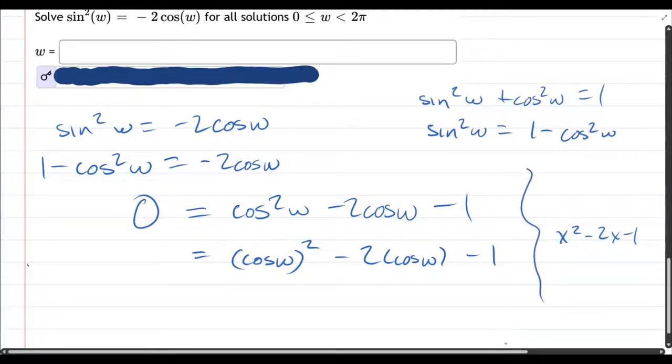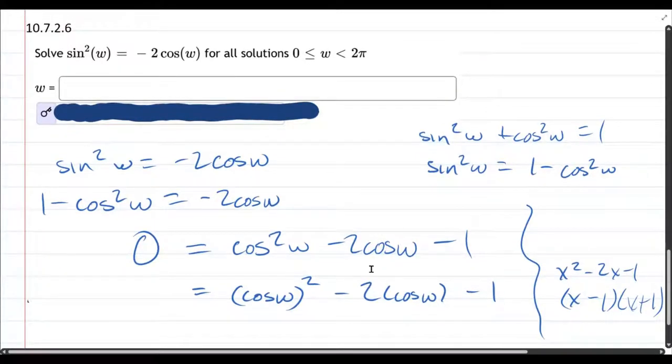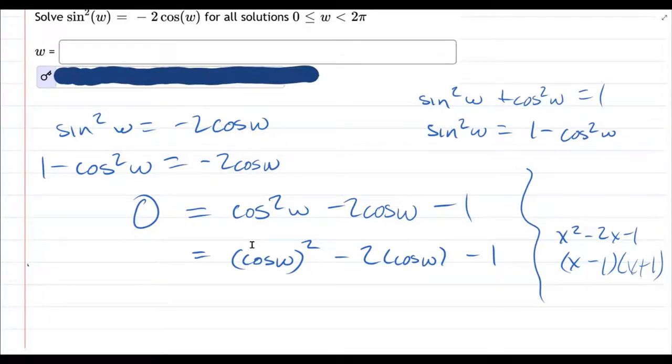So how does this factor? So we need to multiply, make negative one, add to make negative two. So we can't do minus one plus one. That won't work because that will have no middle term. Usually these are set up to factor nicely. This doesn't seem to be factoring very nicely at all.